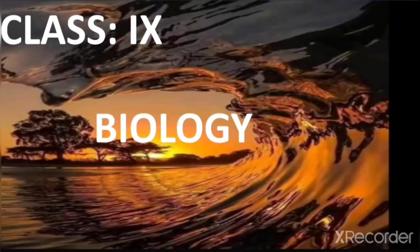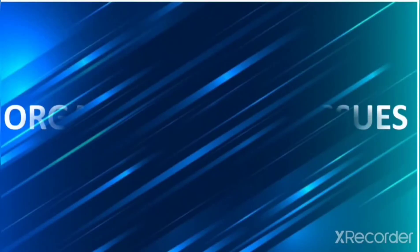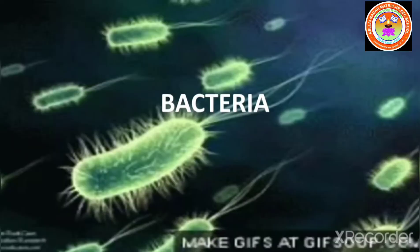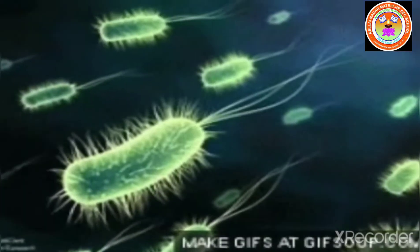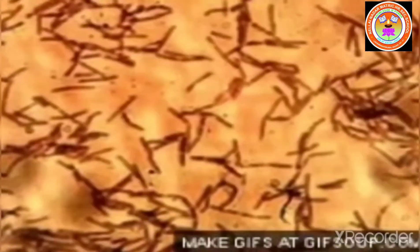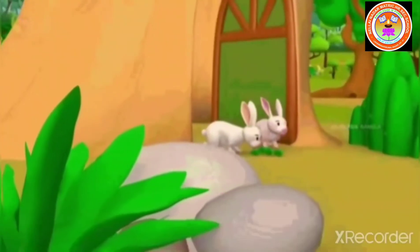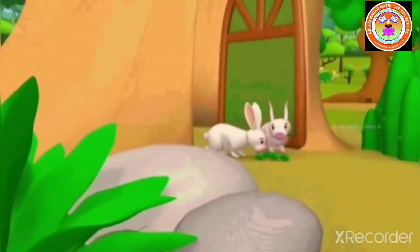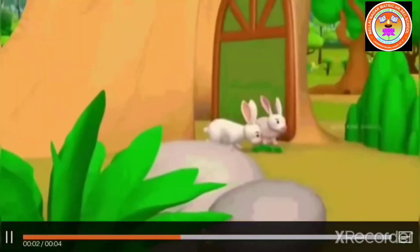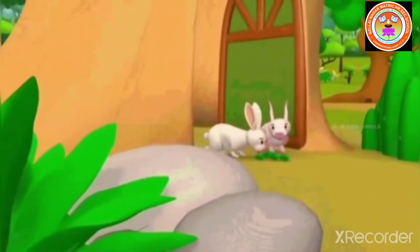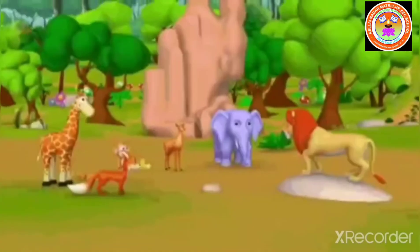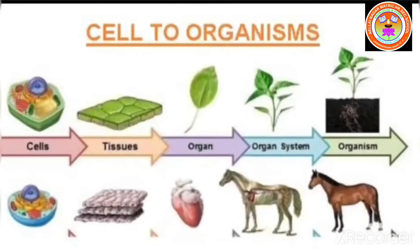Hello children. In this video let us see Unit 18: Organization of Tissues. Unicellular organisms like bacteria and protozoan are made of a single cell. On the other hand, multicellular organisms like higher plants and animals are composed of millions of different types of cells that are grouped into different levels of organization. Multicellular organisms have specialized cells, tissues, organs and organ systems that perform specific functions.